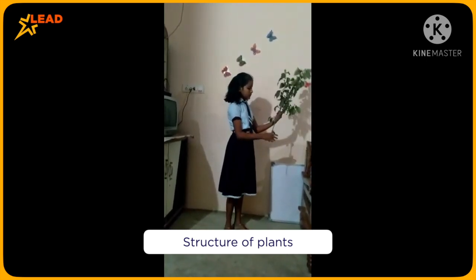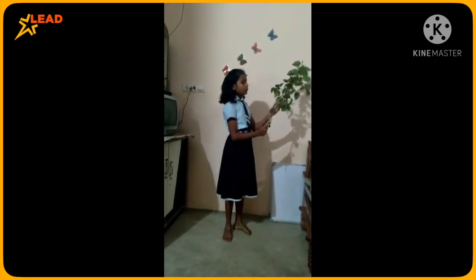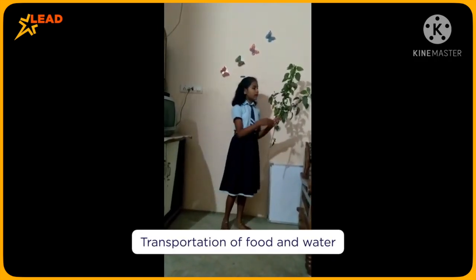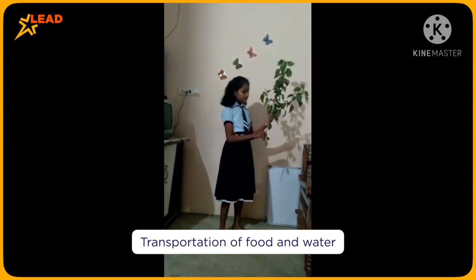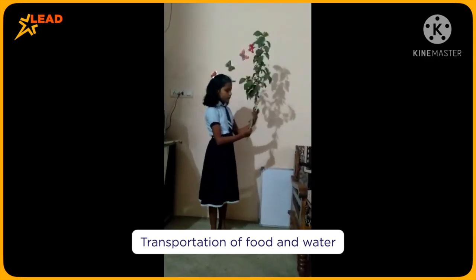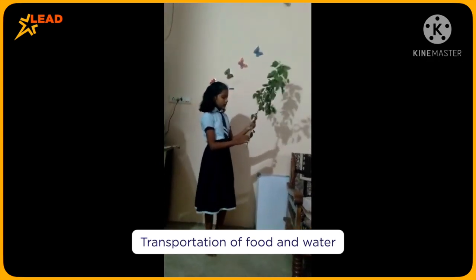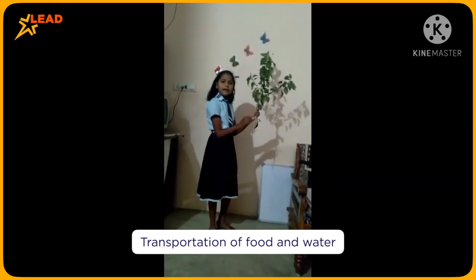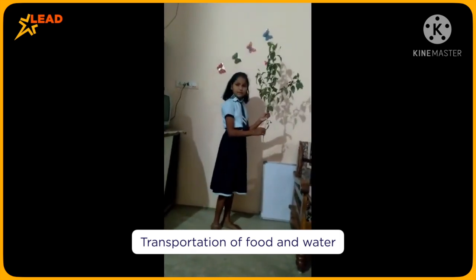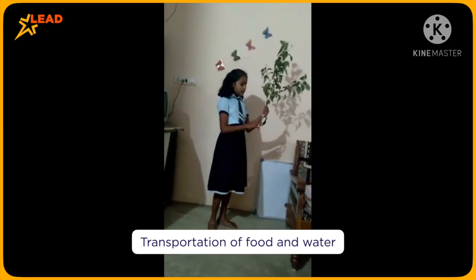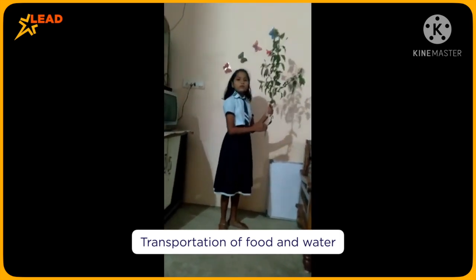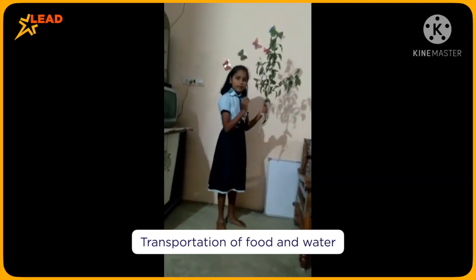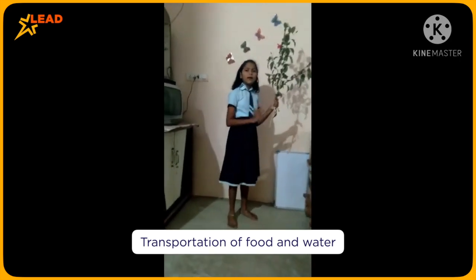We have to know how the food and water transport to all parts of the plant. The phloem and the xylem are fixed in this channel, and from those the food and the water are transported to all parts of the plant.